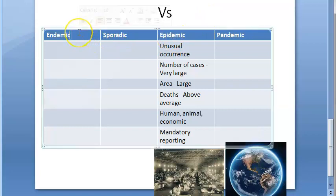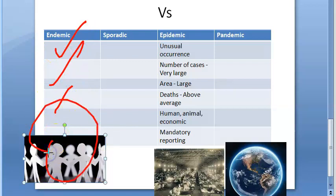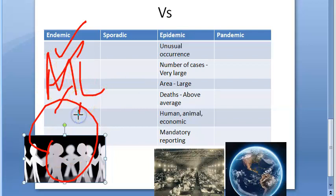First, let's look at endemic. Endemic is the constant presence of a disease or any infection within a geographical area or population group without importation from outside. So in a particular group, this disease is constantly present. Examples of endemic diseases include malaria and leprosy — always present in a given population. There will be a common source of infection in endemic, and this can become an epidemic later.